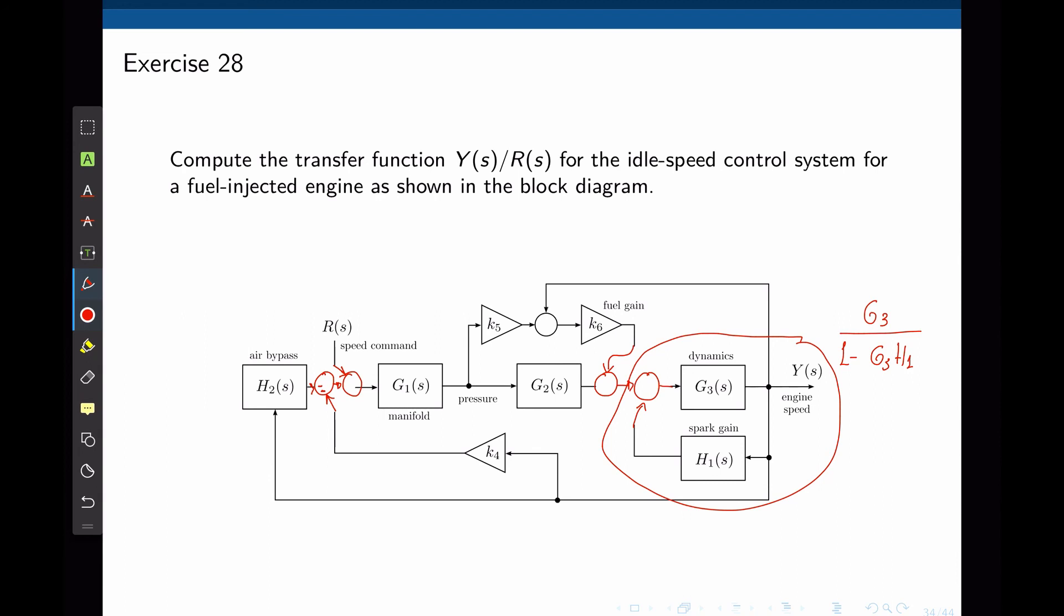Now let's look at how we can simplify K4 and H2. If the signal here is called A, the signal after K4 is K4 times A, and the signal after H2 is H2 times A. The signal after the sum is H2A plus K4A, both multiplied by negative 1. So if you now factor A, we can see that H2 and K4 can simply be added together.